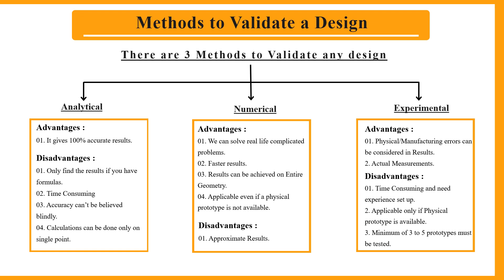The numerical method's advantages are that we can solve real-life complicated problems faster, results can be achieved over the entire geometry, and it is applicable even when a physical prototype is not available. The disadvantage is that results are approximate. The experimental method's advantages are that physical manufacturing errors can be considered in results and actual measurements can be taken. Disadvantages include being time consuming, requiring an experienced setup, and requiring a physical prototype. A minimum of three to five prototypes must be tested before getting results.